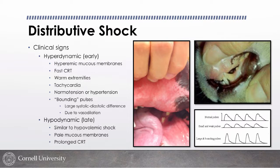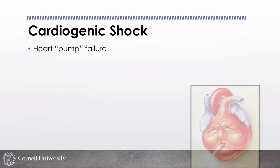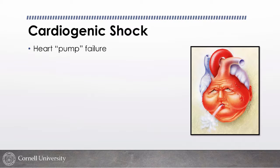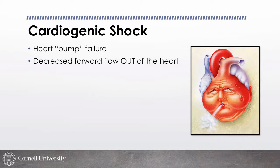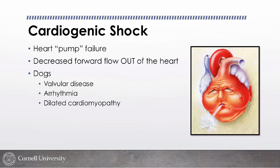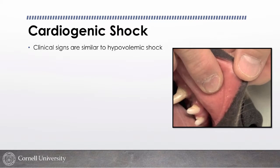Late distributive shock can progress to a hypodynamic phase that looks much more like hypovolemic shock — pale, etc. Cardiogenic shock is a failure of the pump itself — failure of forward flow. Most of these patients also have concurrent congestive heart failure, where fluid backs up into the lungs from the left side, or into the abdomen from the right side. It's actually rare to have cardiogenic shock without concurrent CHF, which helps us sort out the likelihood. In dogs it's due to valvular disease, arrhythmias, or dilated cardiomyopathy; in cats usually a cardiomyopathy.